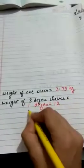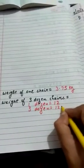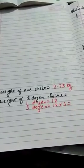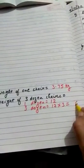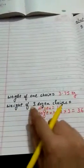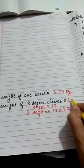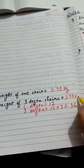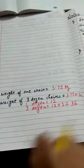These are 12. To three dozen mein kitne ho jayenge. Jab hum 12 ko three se multiply karenge, so what we will get. We will get 3 into 2, 6 and 3 into 1, 36. Weight of three dozen chairs - bete agar hum 3.75 ko multiply karenge 36 ke saath, then we will get the answer.